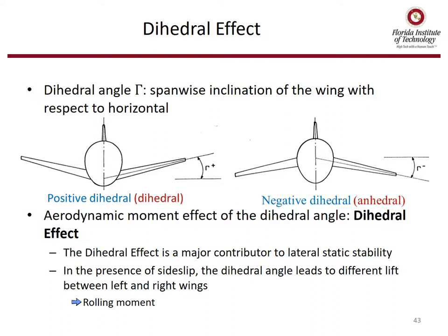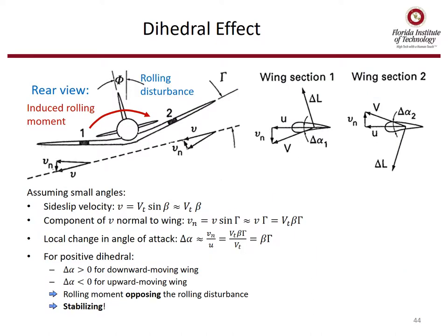Dihedral angle is a spanwise inclination of the wing with respect to the horizon. Positive dihedral is shown on the left aircraft; negative dihedral, sometimes called anhedral, is shown on the right. The dihedral effect is a major contributor to lateral static stability. In the presence of sideslip, the dihedral angle leads to different lift between left and right wings, generating a rolling moment. Using vector analysis, the rolling moment opposes the roll disturbance — we need that to be stabilizing.